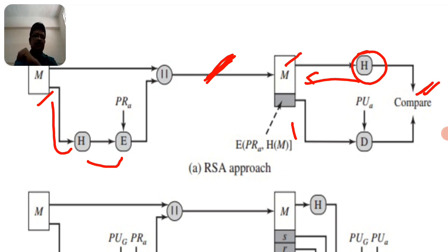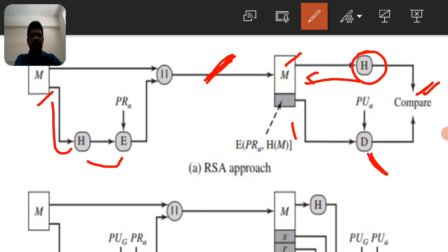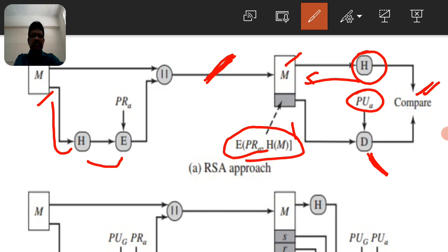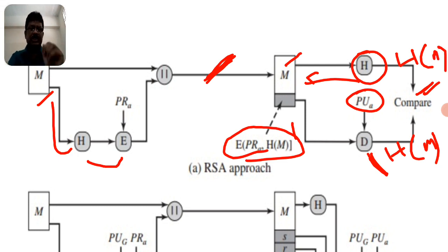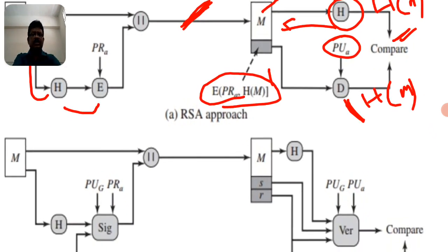The authenticated messages are produced and concatenated, forming M and E of M. On the decryption side, the hash function is applied again to the message, and the public key is used to decrypt. The encryption with the private key is reversed by decryption with the public key, yielding H of M. If both H of M values are equal, it provides authentication — this is the RSA approach concept.